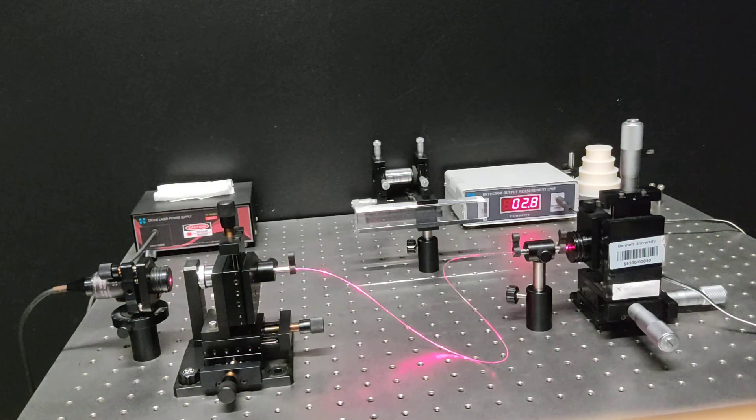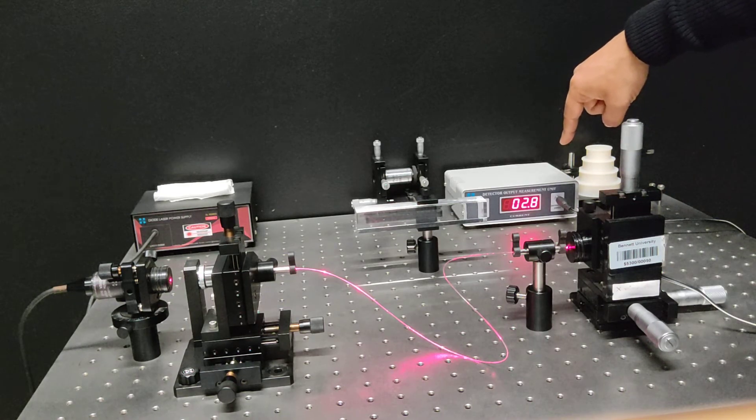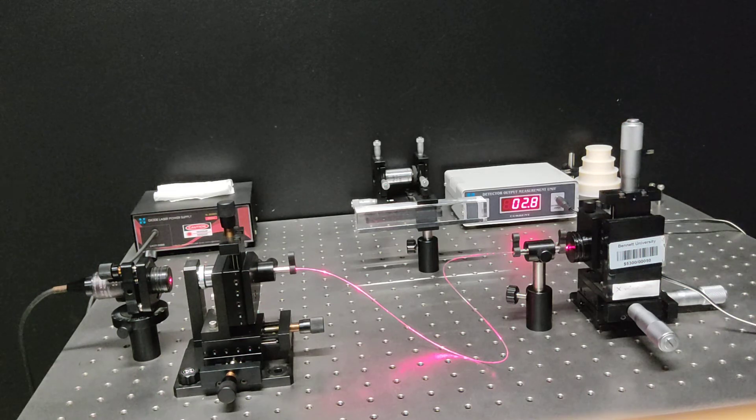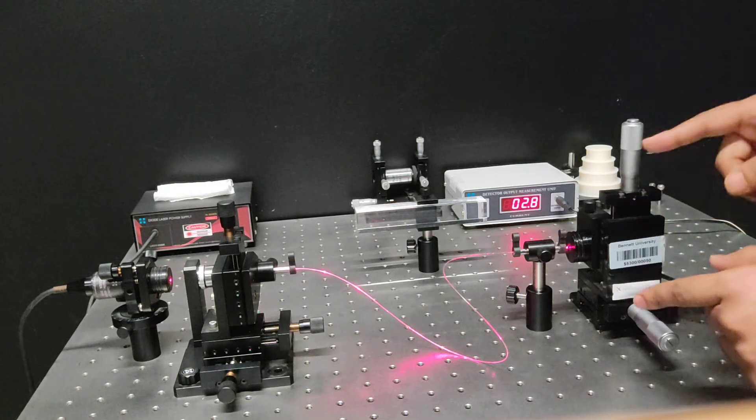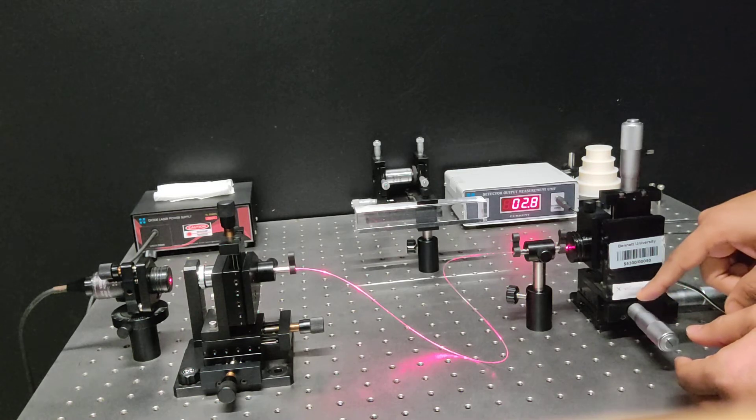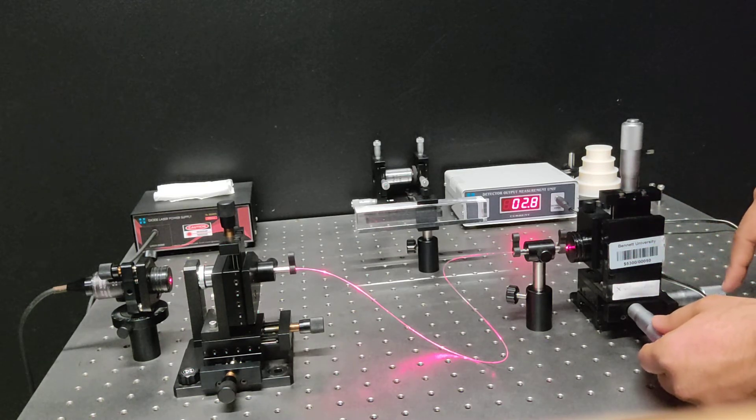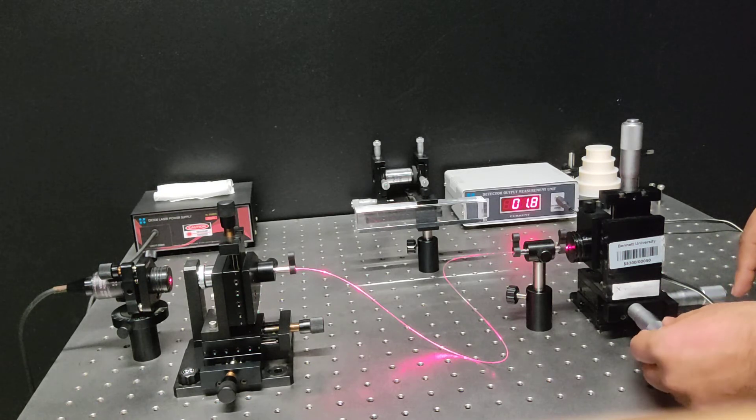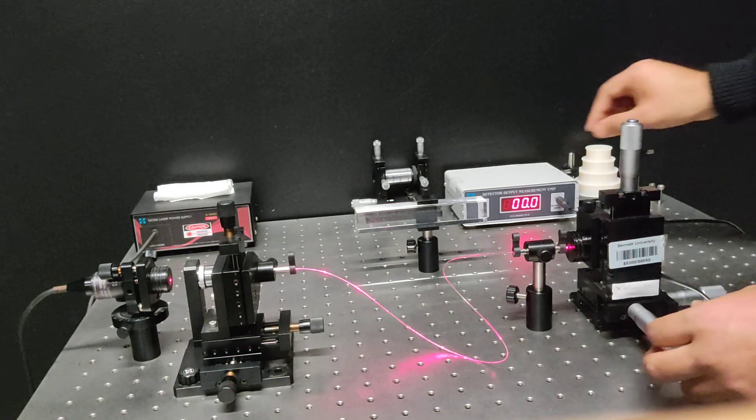Typically the current will follow the Gaussian distribution. As you can see now, the detector reading is showing 2.8 milliampere. Since the detector is attached to a positional stage, if I change the position of the detector using this particular knob you see that the power will get changed because now it is moving towards the Gaussian tail, so that's why the power is reduced.